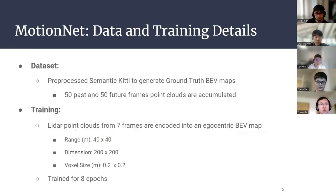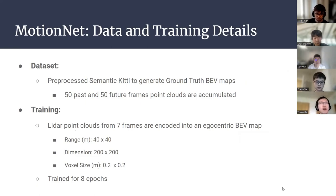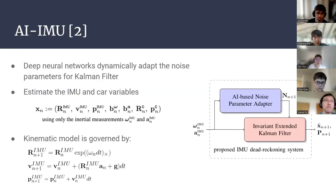We use the SemanticKITTI dataset for training and evaluation. We first pre-processed the dataset to generate the ground truth using 50 past and 50 future frames. For training, we converted seven frames of point clouds into the local map with a range of 20 meters around the ego vehicle, resulting in a resolution of 0.2 meters. We then trained MotionNet for several epochs.